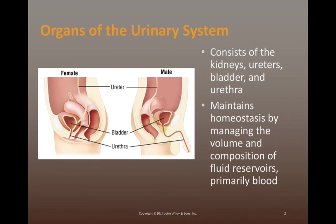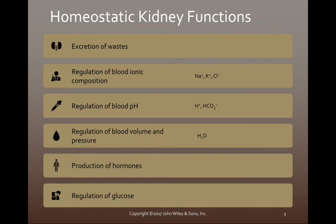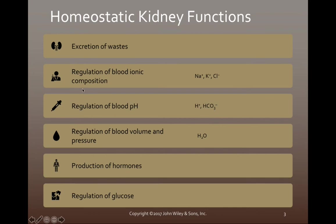Now that we've discussed the components of the urinary system, we'll give a general overview of the functions the kidneys offer. The kidneys' main role is to excrete waste products — nitrogenous wastes formed as a byproduct of protein metabolism must be filtered out of the blood through the urinary system. The kidneys also regulate the ionic composition of the blood, including sodium, potassium, and chloride, which facilitates regulation of blood volume and therefore blood pressure.